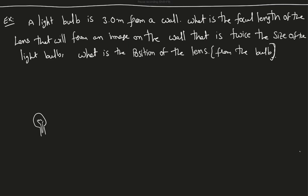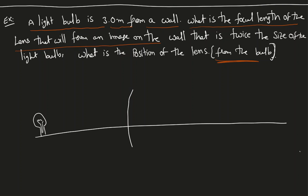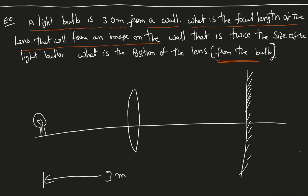In this example, a light bulb is 3 meters from a wall. What is the focal length of the lens that will form an image on the wall that is twice the size of the light bulb? What is the position of the lens from the bulb? It's a good idea to draw a diagram. Here is the light bulb, and I'm going to take this as a converging lens. The distance between the wall and the light bulb is given as 3 meters.